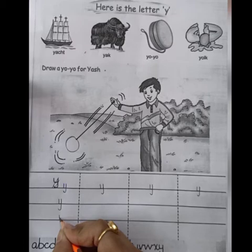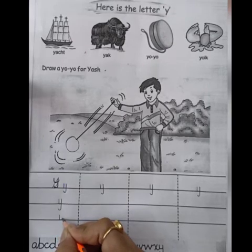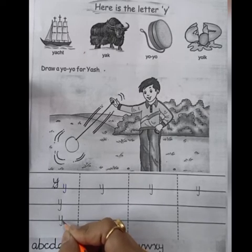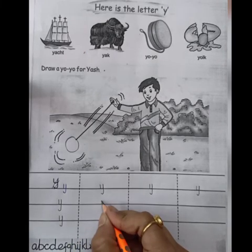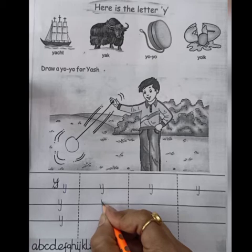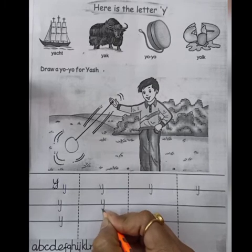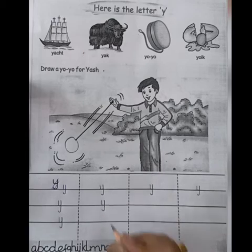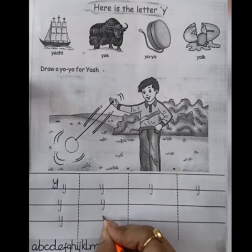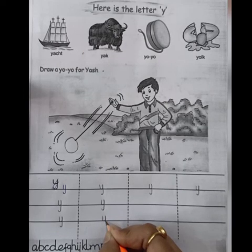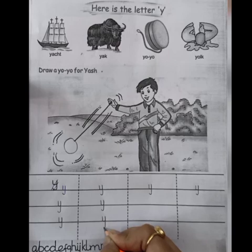One more time. Draw a straight line, turn, go up, come down, straight and a small curl. This is yoyo. This is monkey letter. Once again: draw a straight line, turn, go up, come down, straight and a small curl. This is yoyo. This is monkey letter.